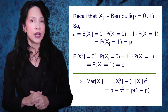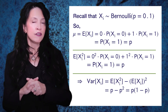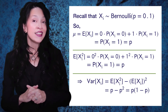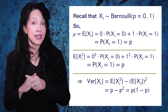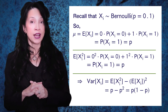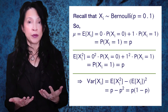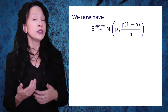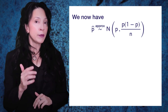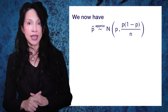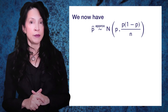So sigma-squared, the variance for the underlying Bernoulli distribution, is the expected value of Xi-squared minus the expected value of Xi, all squared — which is p minus p-squared, or factoring out p: p times (1 minus p). This means that the variance for X-bar under the central limit theorem is p(1−p) divided by n, our sample size. In other words, our P-hat is approximately normally distributed with mean p and variance p(1−p)/n.